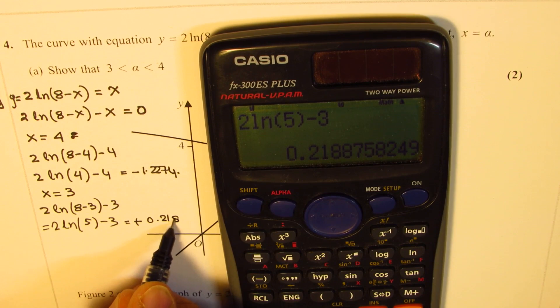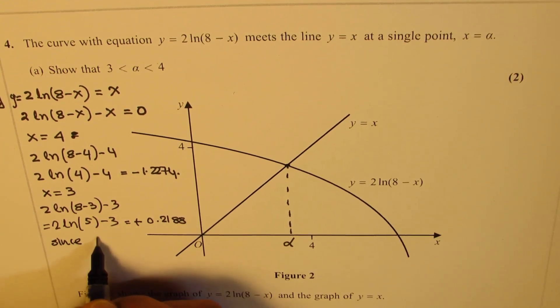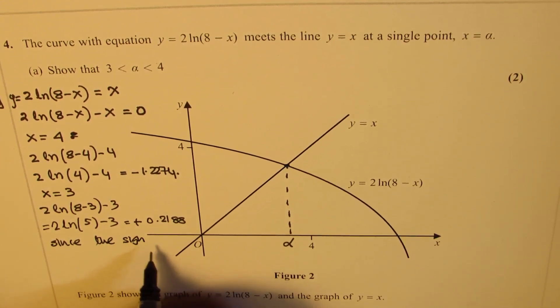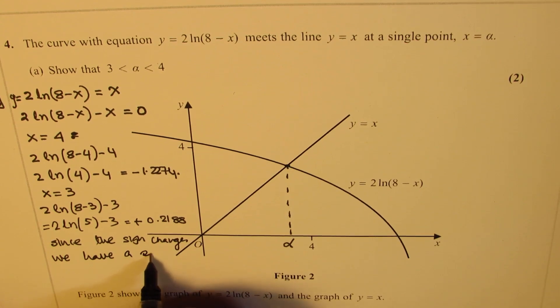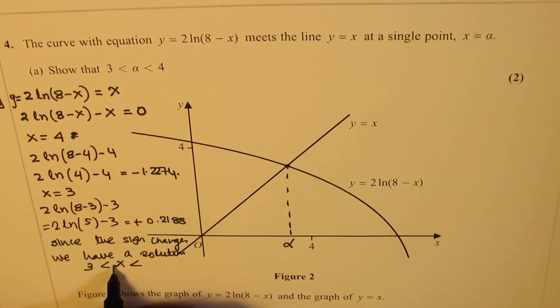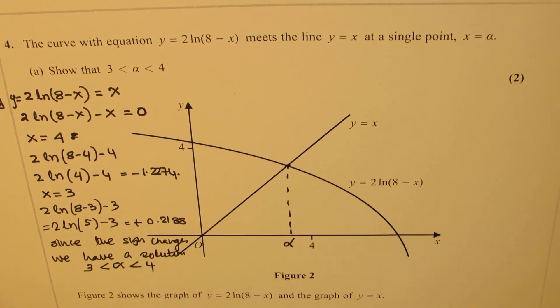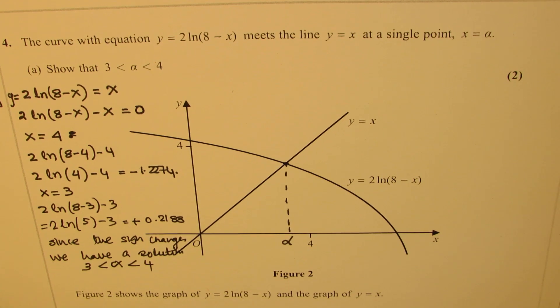Now since the sign changes, we have a solution when x is greater than 3 and less than 4. So the value of alpha, the actual solution alpha, is definitely between 3 and 4. So that is how we could actually prove it.